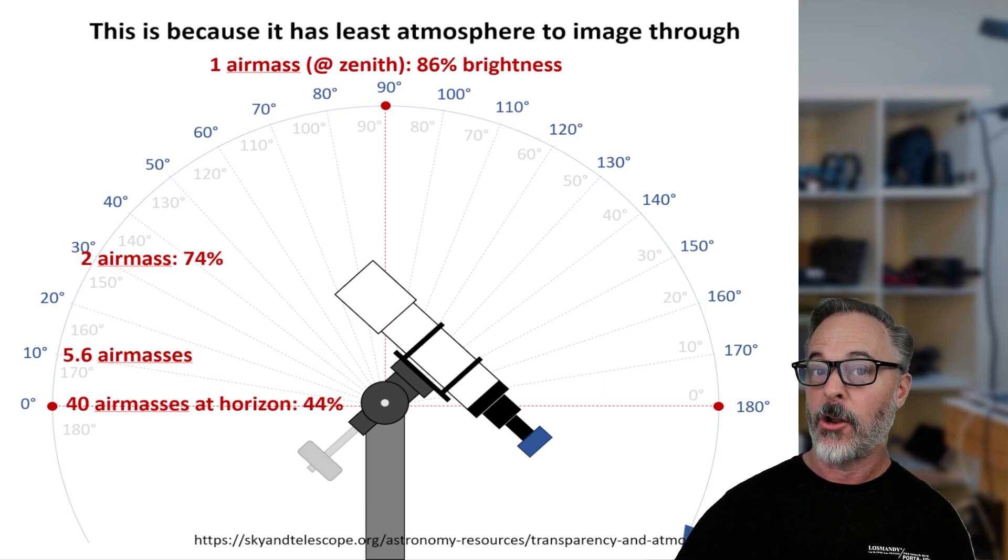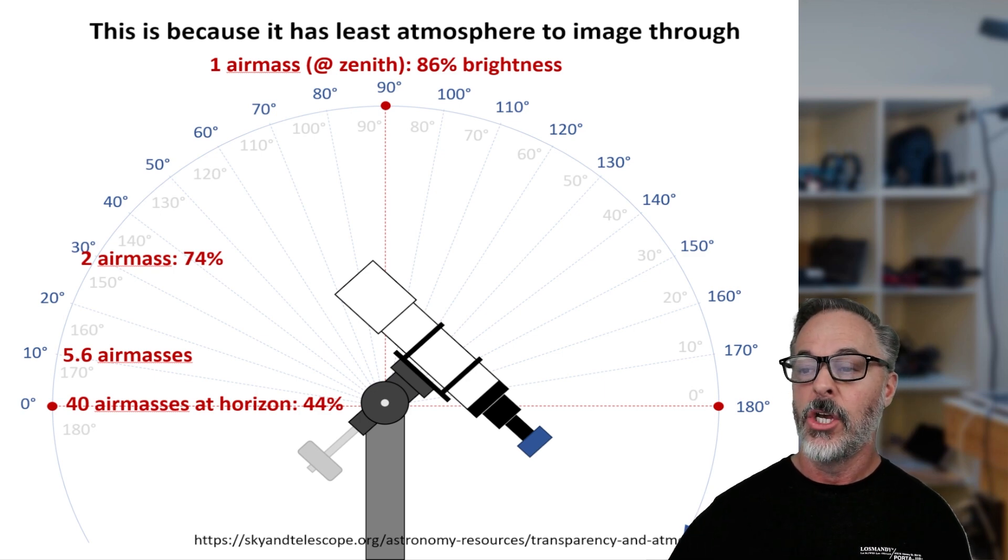Now, why isn't it a hundred percent? Well, we're shooting through atmosphere. So if we had a space telescope, it would be a hundred percent brightness, but we have to shoot through some amount of atmosphere. So in this case, you know, the best we could hope for at sea level is 86% brightness.